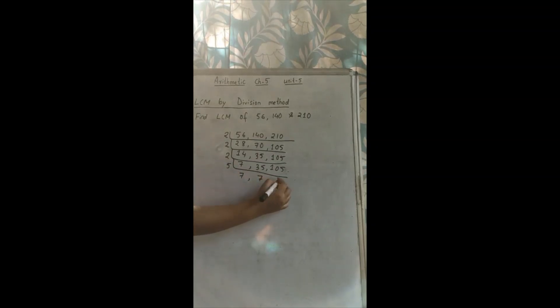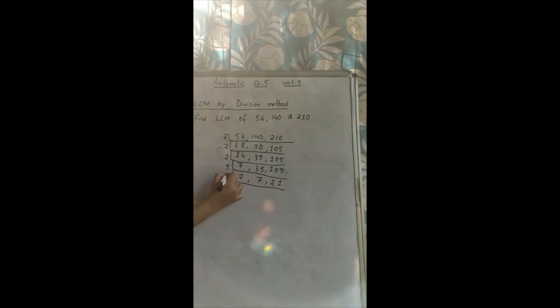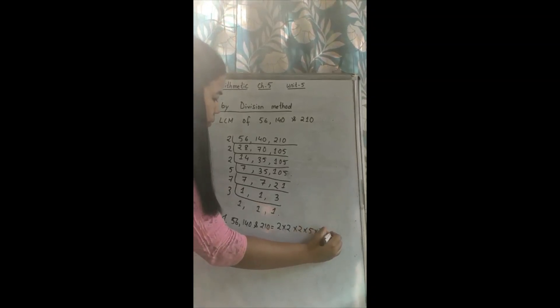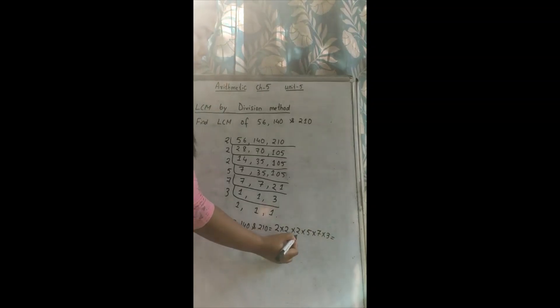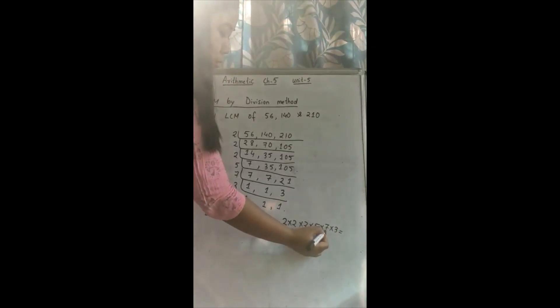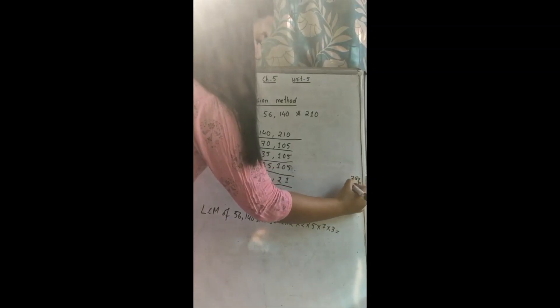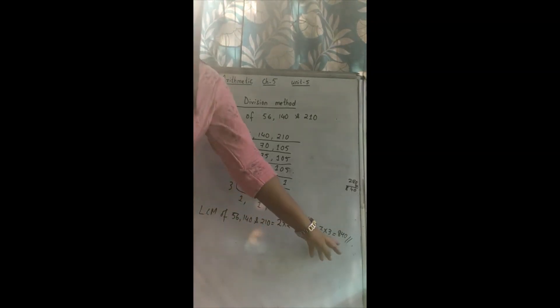Now divide by 5: 5 goes into 35 = 7, carry forward the others. Then divide by 7: 7 ÷ 7 = 1, carry forward to get 1s. Then divide by 3 to complete. So the LCM of 56, 140, and 210 — you have to multiply all the factors: 2 × 2 × 2 = 8, 8 × 5 = 40, 40 × 7 = 280, 280 × 3 = 840. So the LCM by division method: the LCM of 56, 140, and 210 is 840.